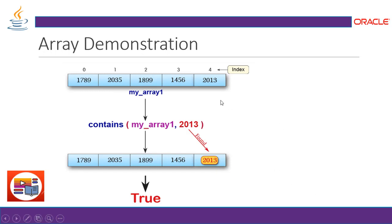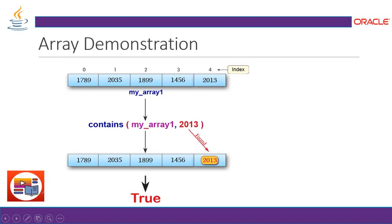Now let's take a look at the demonstration. Suppose we have a single-dimensional array of size 5 and these are the elements the data contains. It is stored in heap memory and this is what the index — 0, 2, 4. The objective of this execution is to find out a particular element and see if it exists — a kind of a search. If it is found, it will give you the location.